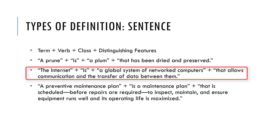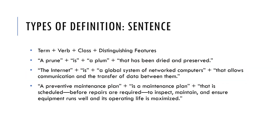Another example: 'the internet is a global system of networked computers that allows communication and the transfer of data between them.' One more example from the workplace: 'a preventive maintenance plan is a maintenance plan that is scheduled before repairs are required to inspect, maintain, and ensure equipment runs well and its operating life is maximized.' A sentence definition is just one sentence that defines one term.